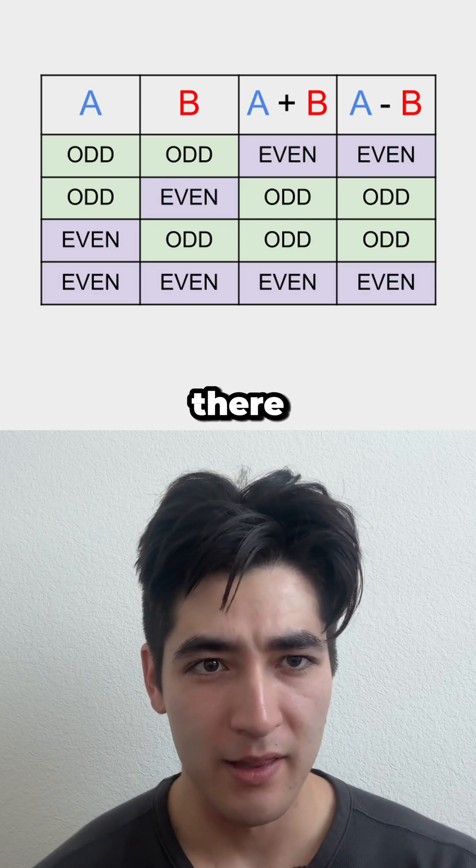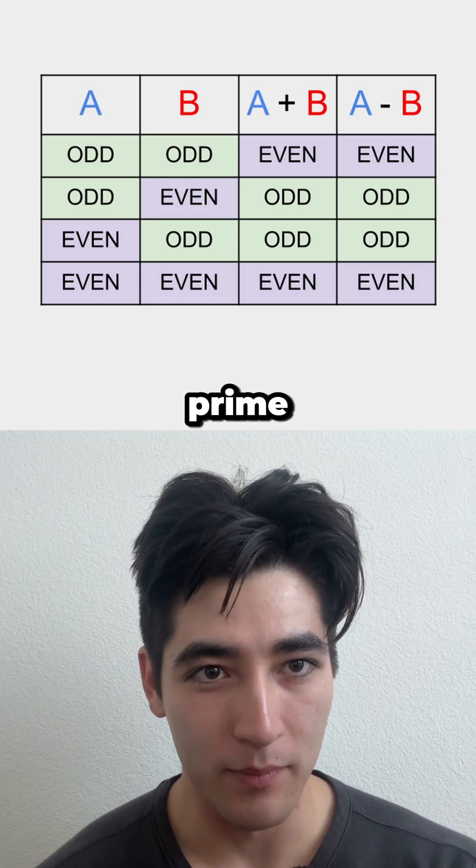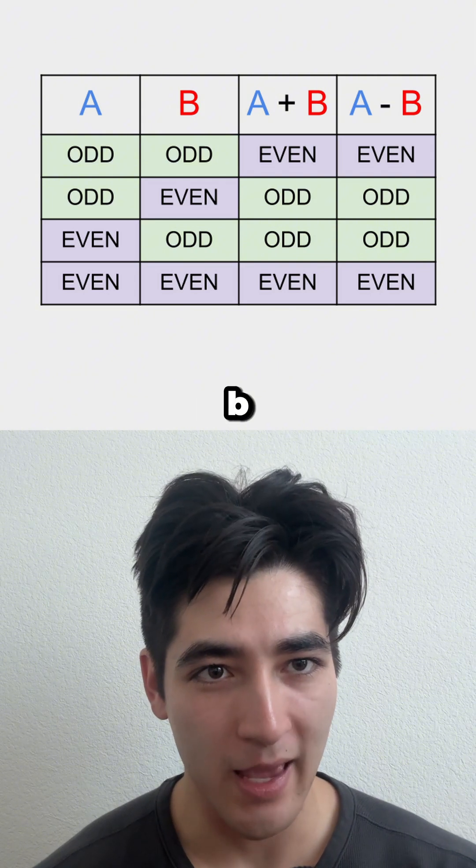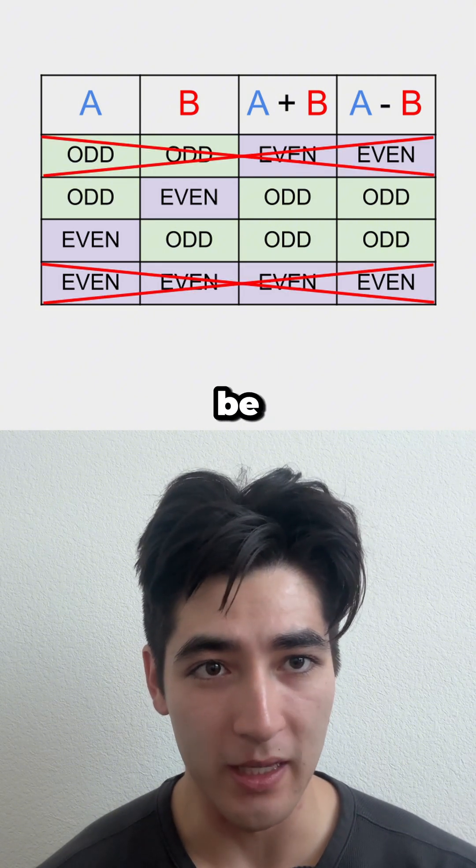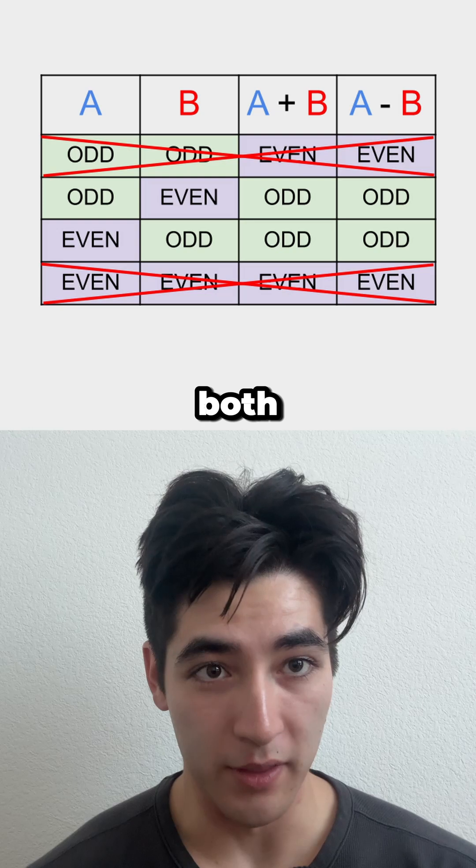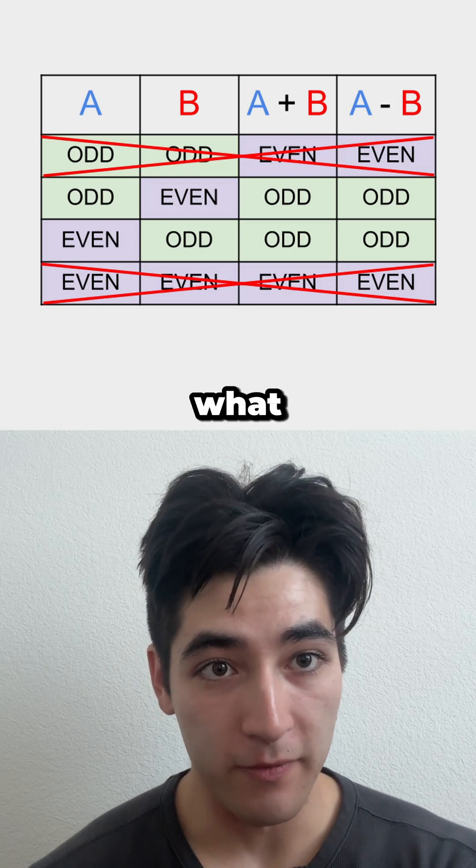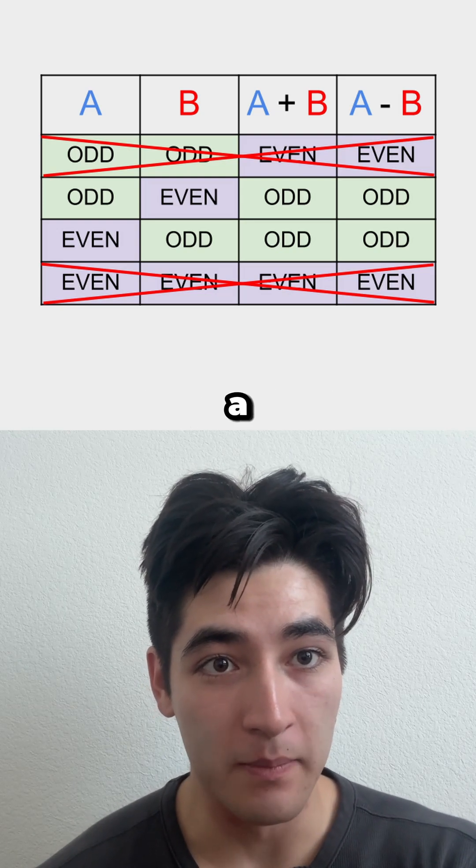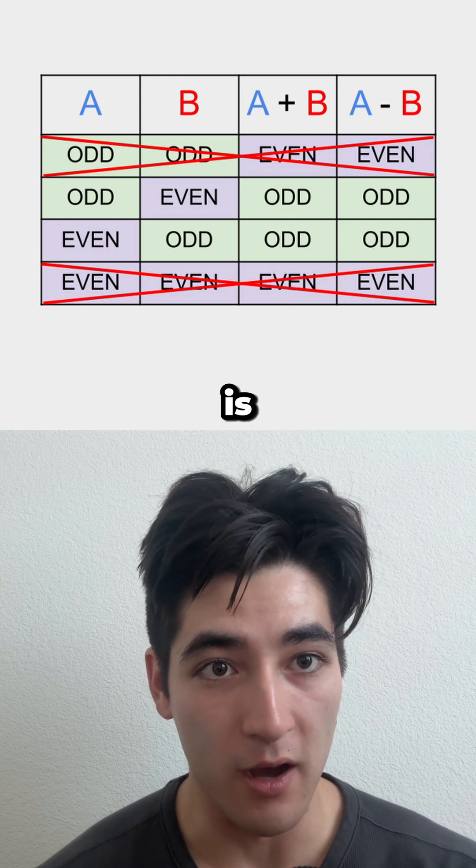However, there is only one even prime, which is two. Therefore, a plus b and a minus b cannot both be even. This means both expressions are odd, and what follows is that one of a and b is even while the other is odd.